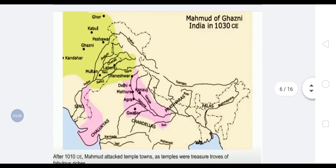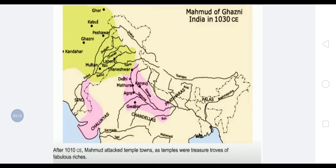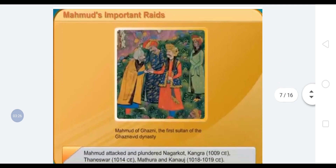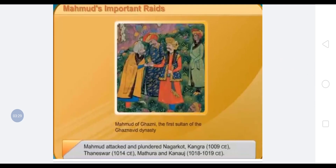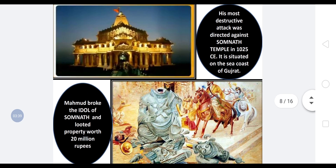Mahmood of Ghazni attacked temples and towns, as temples were treasure troves of fabulous riches. He really wanted to loot the great wealth of India. The important attacks were on Nagarkot, Kangra, Thaneswar, Mathura, and Kannauj. But the most destructive attack was directed against the Somnath temple in 1025 CE, situated on the sea coast of Gujarat, where Mahmood broke the idol and looted property worth 20 million rupees.